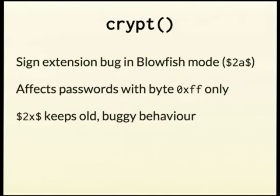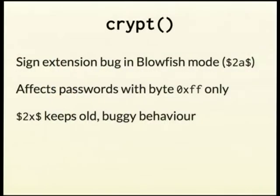Crypt had a little backward incompatible change which in practice probably won't affect anyone. There was a sign extension bug in Blowfish mode in crypt for people who had passwords with the byte 0xFF only. That byte is invalid in all UTF-8 sequences and since every browser for about the last 10 years has sent forms as UTF-8 by default, in practice it's really unlikely anyone is affected. But if you really need the old buggy behaviour, instead of using the prefix '2a' use '2x' and you'll get behaviour consistent with previous versions of PHP.